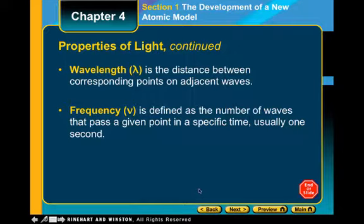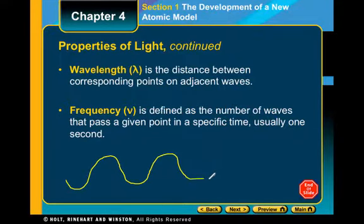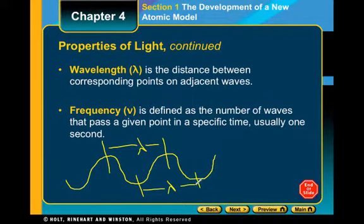Some of the terms you need to know with light is wavelength and frequency. Wavelength is the distance between corresponding points on an adjacent wave. So if this is my wave, from here to here, from peak to peak, this is our wavelength, represented by lambda, a Greek letter lambda. Or you could go from trough to trough. They'd be the same wavelength. You can go from any point. So you could go from the downward slope halfway here to halfway here. That would still be lambda.